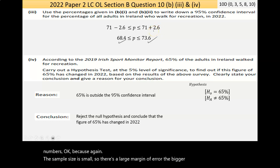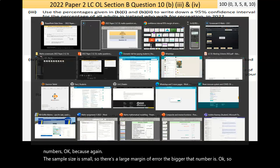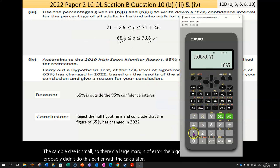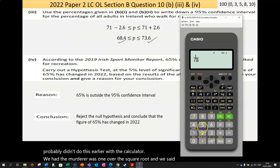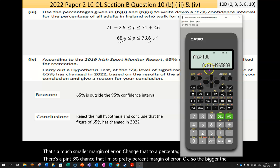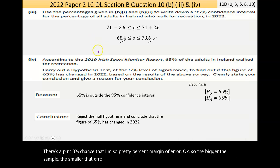We were told it was 71%, so it's going to be plus the margin of error of 2.6%, and it's going to be minus the margin of error of 2.6%. 71% plus 2.6% is 73.6%, 71% take away 2.6% is 68.4%. So, there's a 95% confidence that the number of people walking would be between these two numbers. Because the sample size is small, so there's a large margin of error.